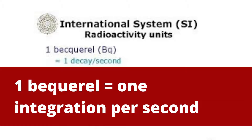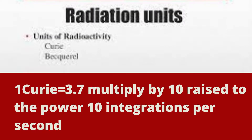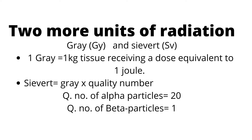Due to the effects of radiation, two more measured units of radiation are in use. One is the Gray, symbol Gy, and the other is the Sievert, symbol Sv. One Gray is defined as 1 kg of tissue receiving a dose equivalent to 1 joule of energy. The Sievert depends upon the Gray: Sievert is equal to Gray multiplied by a quality number.